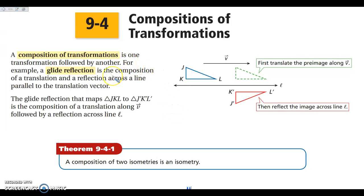All right, guys, today we are looking at section 9-4, which is compositions of transformations. A composition of transformations is simply when we have multiple transformations put together. One of our most common ones is called a glide reflection. A glide reflection is where you translate or glide it over first, and then you reflect it over a line.